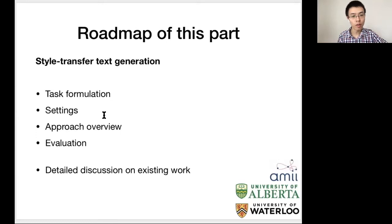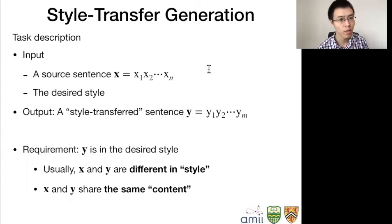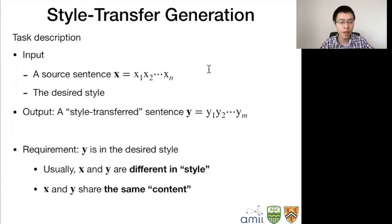Here is the task description of style transfer text generation. The input is a sentence or sequence of words, but in addition to that, you also need to specify what is the desired style. The output is the style-transferred sentence Y, which is another sequence of words. You may have different words from the input, but essentially you transfer X into a desired style Y — this is the hard requirement. Otherwise, it will not be called style transfer.